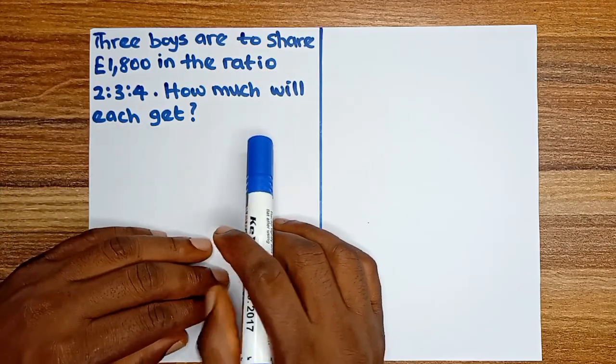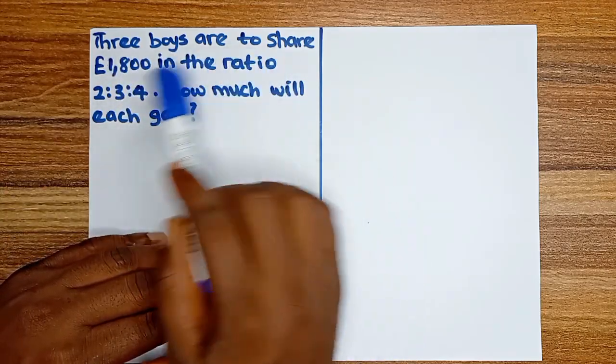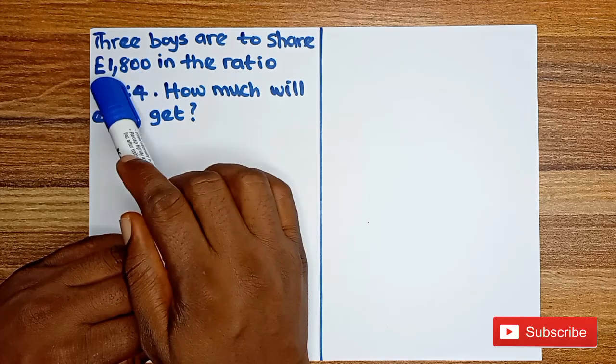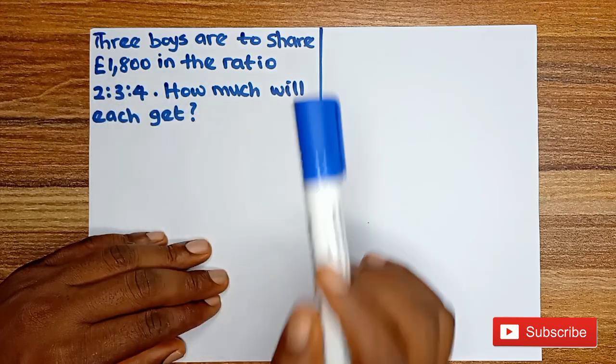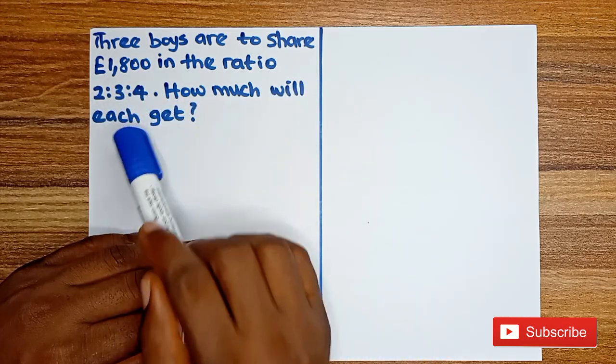Hi guys, let's look at this simple question. We are told that three boys are to share £1,800 in the ratio 2:3:4. The question is, how much will each get?